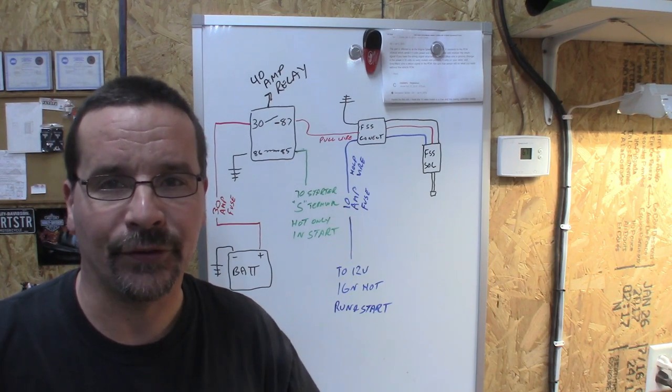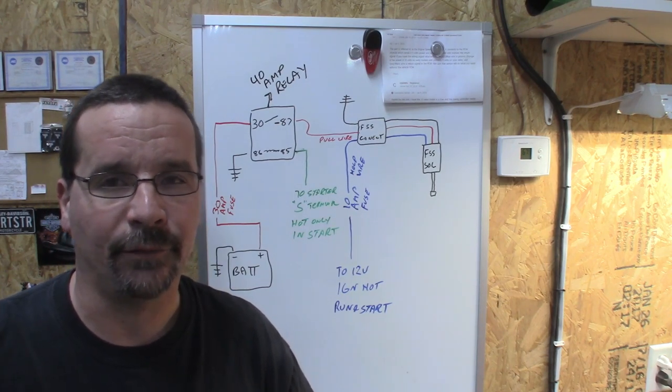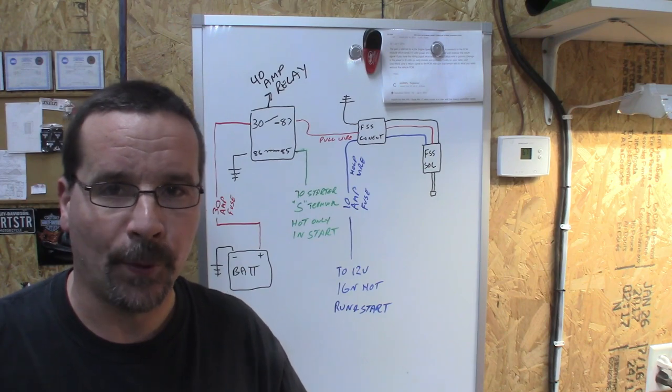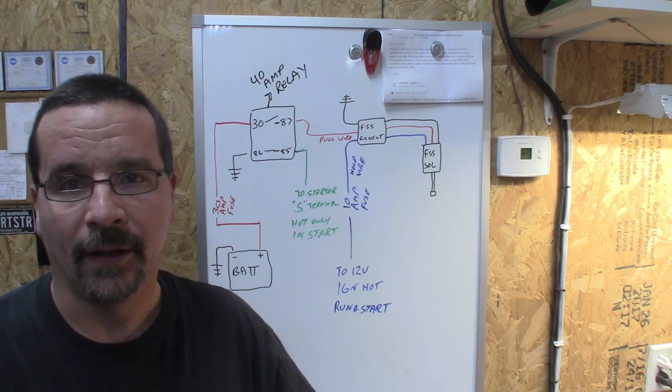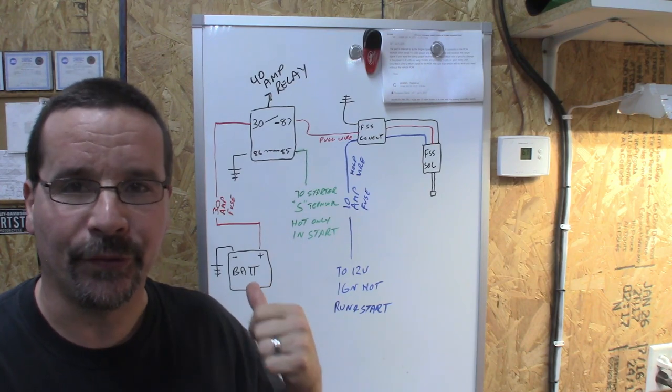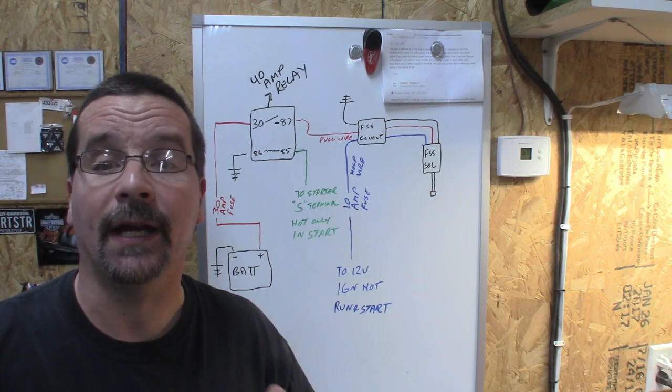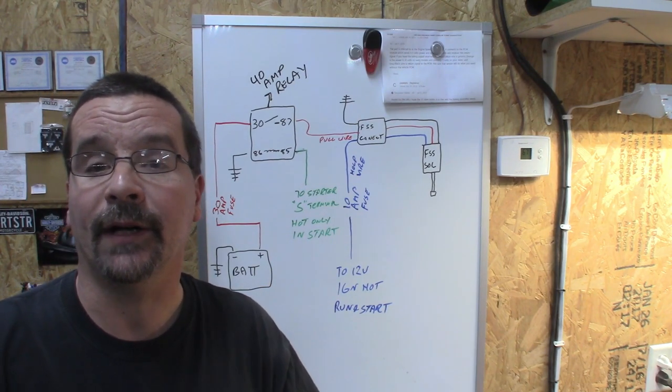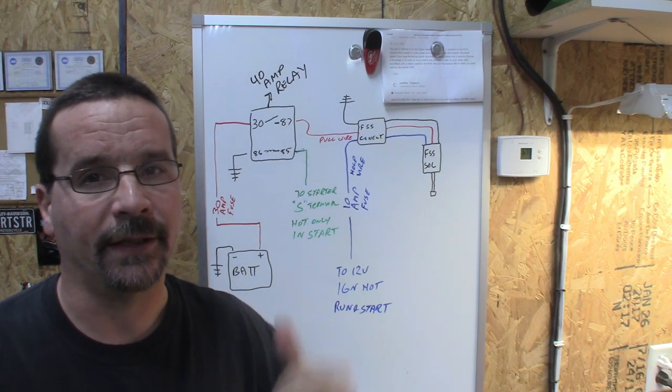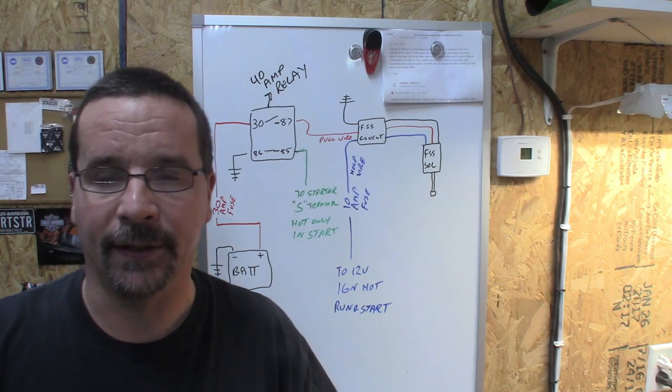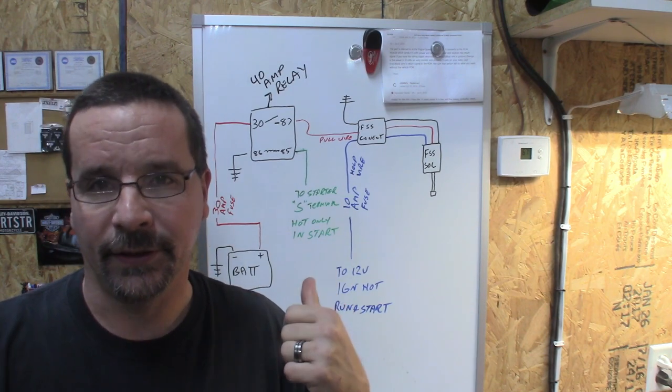Now what we're going to focus on today is wiring the fuel shutoff solenoid for the P-Pump 12-valve Cummins. Several other mechanical diesels use a setup similar to this but for now I'm just going to focus on the 12-valve Cummins. But like I said if you have another application check it because it may work the same way. I ran into a couple other diesel engines that use this.